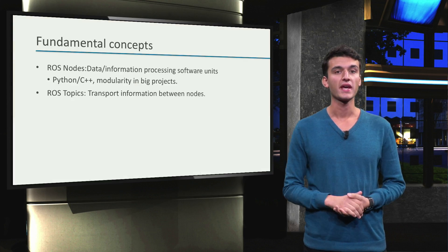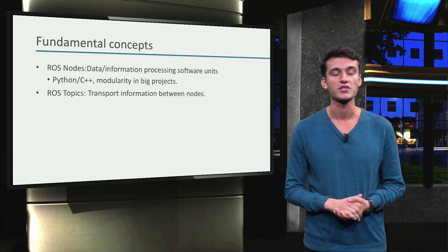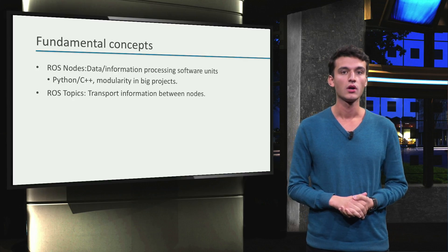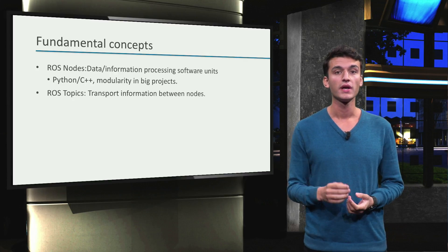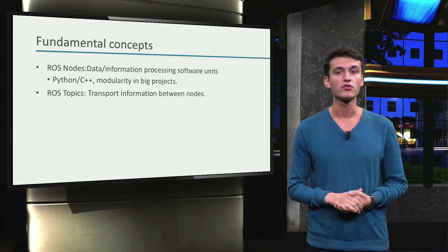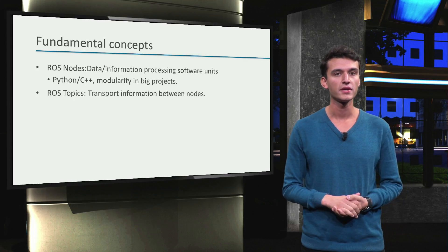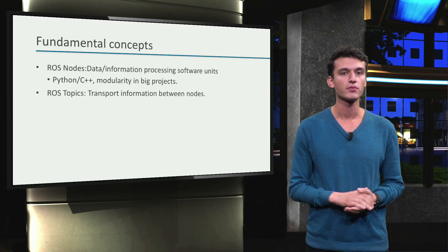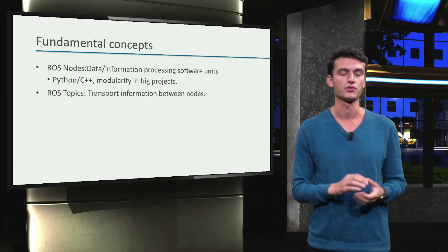We will do a quick recap about finding out what's happening in your ROS application. A ROS node, as you already know, is basically an information processing software unit. A ROS topic is used to transport information between nodes.